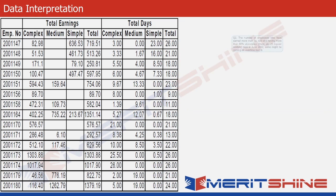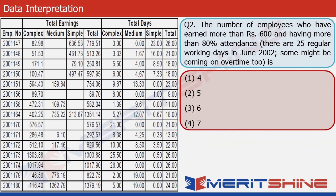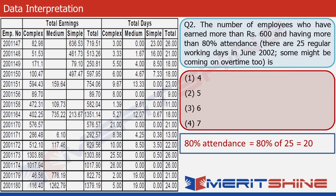Question number 2: we need to count the number of employees who have earned more than 600 rupees in the month and whose attendance is more than 80%. There are 25 regular days in the month, so 80% attendance equals 20 days. We need to look at the two total columns. The first employee has total earnings of 719.51 — more than 600 — and worked 26 days — more than 20 — so he qualifies.